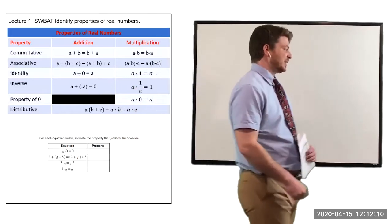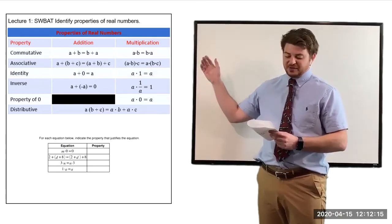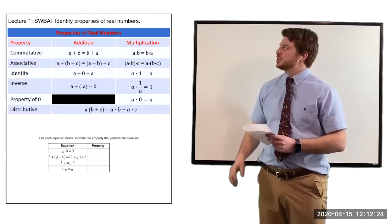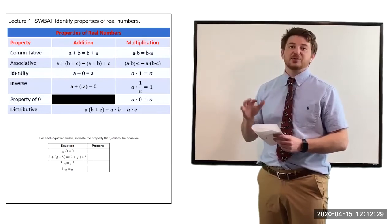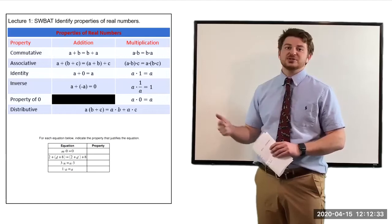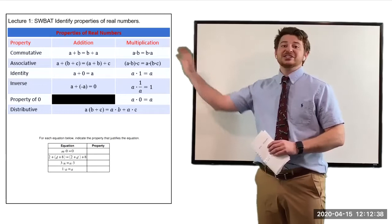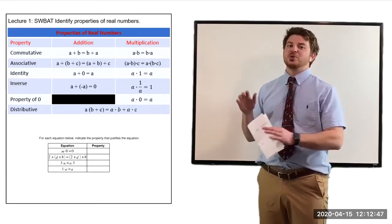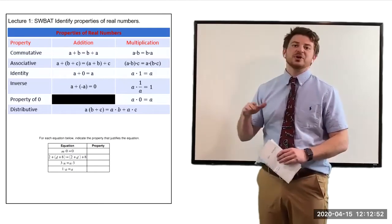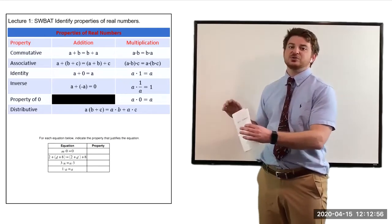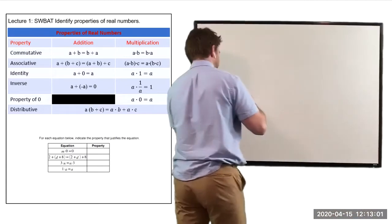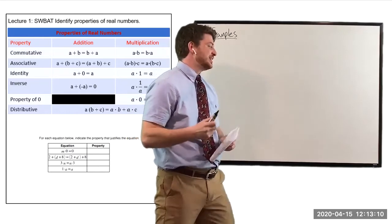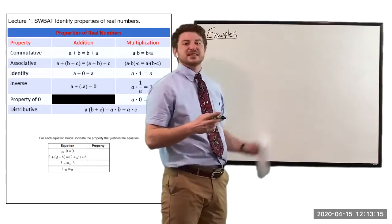The first thing we're going to talk about is the properties of real numbers. If you look up here at my table, we have the commutative property, the associative property, identity property, the inverse property, property of zero, and the distributive property. What I need you to notice is that four of the properties apply for both addition and multiplication: the commutative property, the associative property, the inverse property, and the identity property. The last two — the multiplicative property of zero and the distributive property — don't apply to both, and I'll talk more about those separately. If you are watching this recorded lecture, you need to have this table down in your notes, and also these examples that are written down right now.